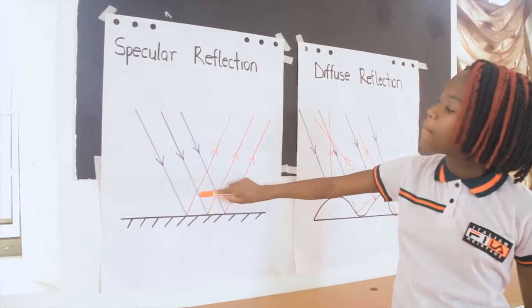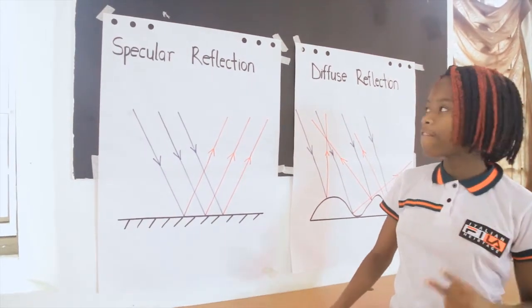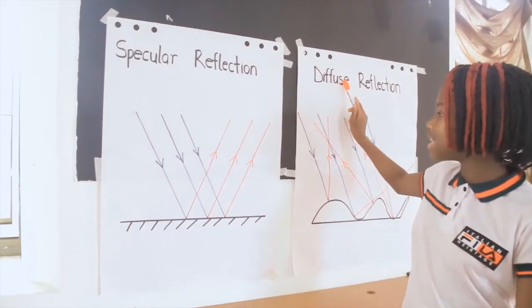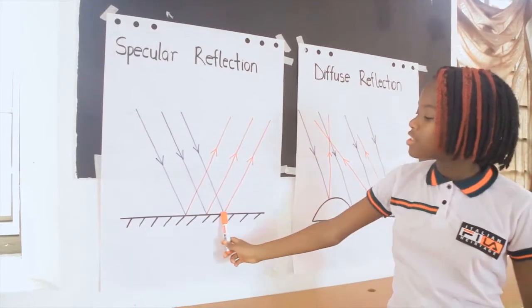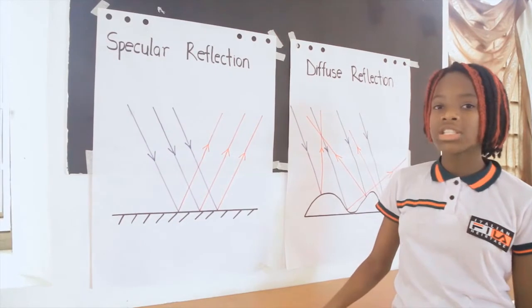Reflection is the bouncing back of light. There are two types of reflections: specular and diffuse. Specular reflection occurs when the surface is smooth and shiny, like glass or water.